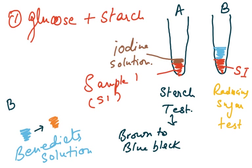Divide solution 1 into two parts, putting them in two separate test tubes — label one A and the other B. Take sample 1 (labeled S1) and place a certain volume of it into both test tubes.